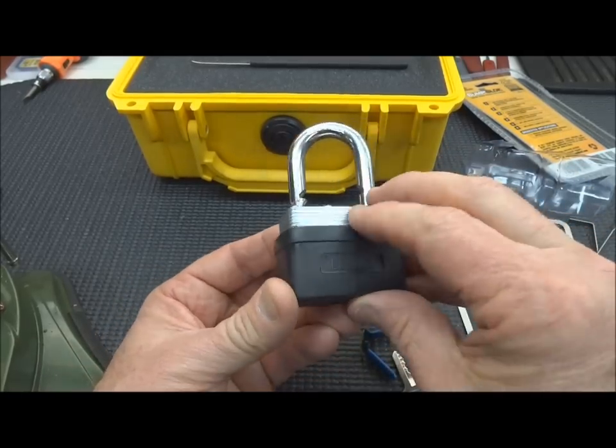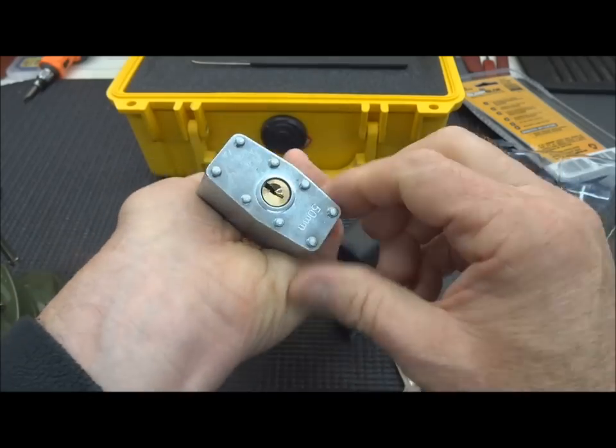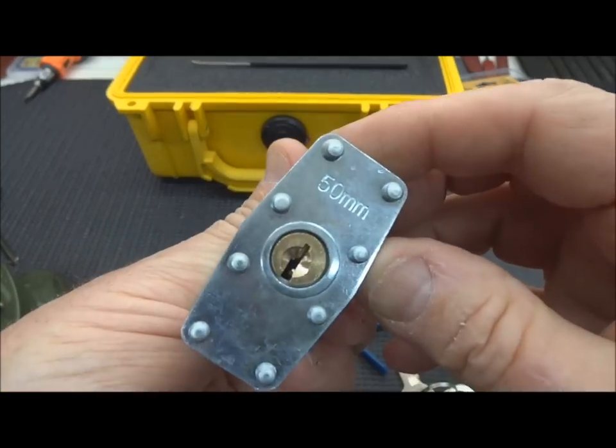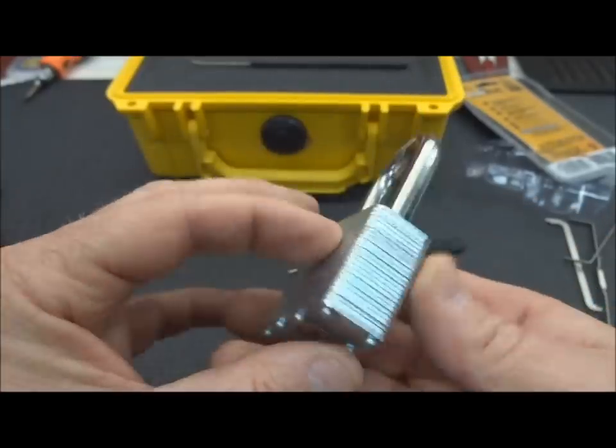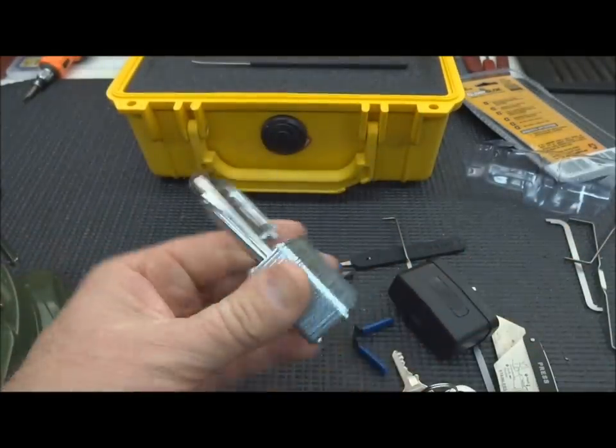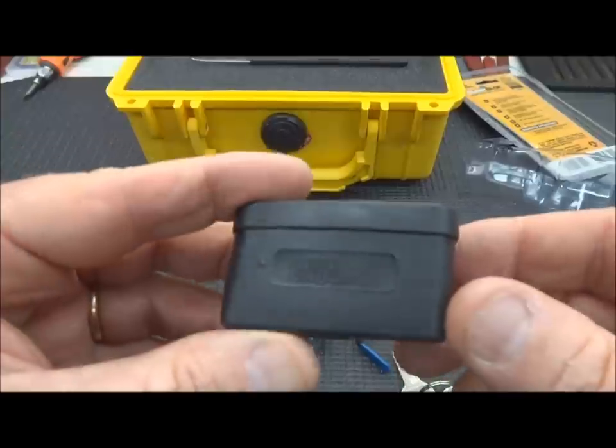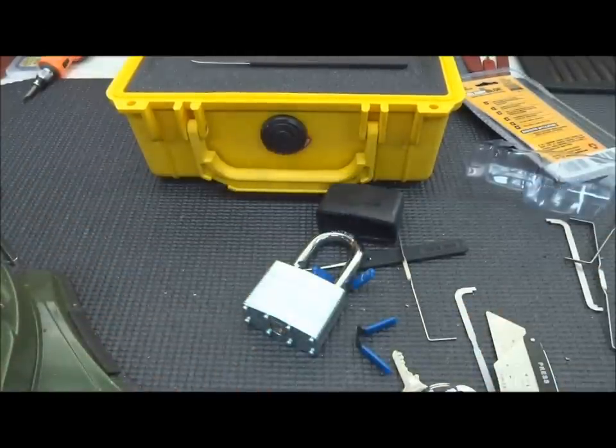On Guard is probably made by Master Lock. Nope, I would say this is probably made in China, no other markings on it, so that would be a good indication. This is probably a Chinese lock and they simply slide on this US made rubber cover and charge about ten times what it's worth.